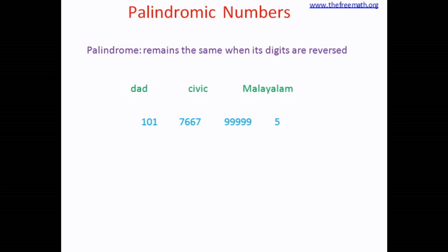How about 5? Is 5 a palindrome? Yes. All single digit numbers are palindromes because there is only one digit. It will be the same number when you reverse it. Now we are going to see some interesting thing about palindromes.